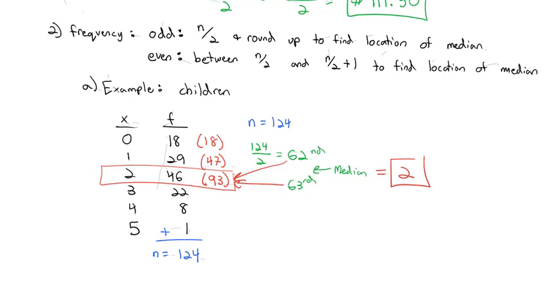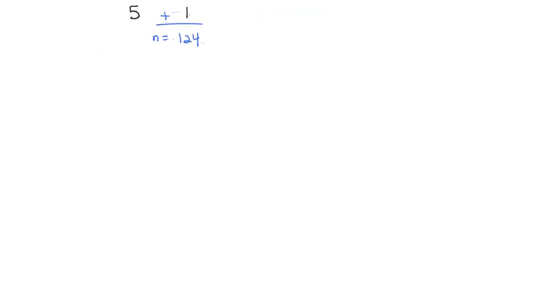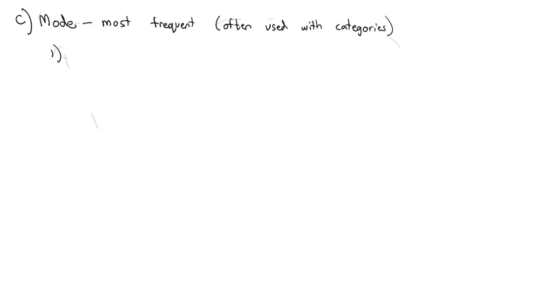So we've talked about two different measures of center, the mean and the median. The third measure of center is not used nearly as often, but it can be useful if we're talking about categorical data. But we can find it also with numeric data. The third measure of center is the mode. It is the one that is the most frequent, and it's often used with categories. When you go to the car dealer and you want to pick what color car, the car dealer says most people pick a red car. That is the mode car. It is the center car, the most frequent because it's most selected. However, we can do it with numbers as well.